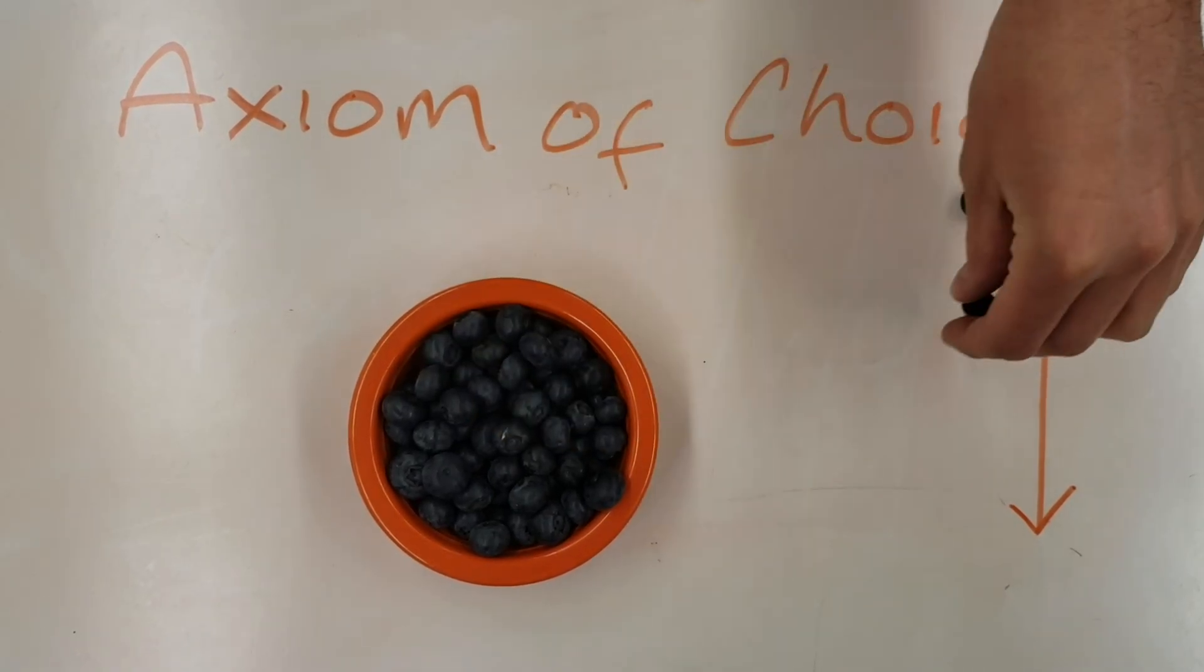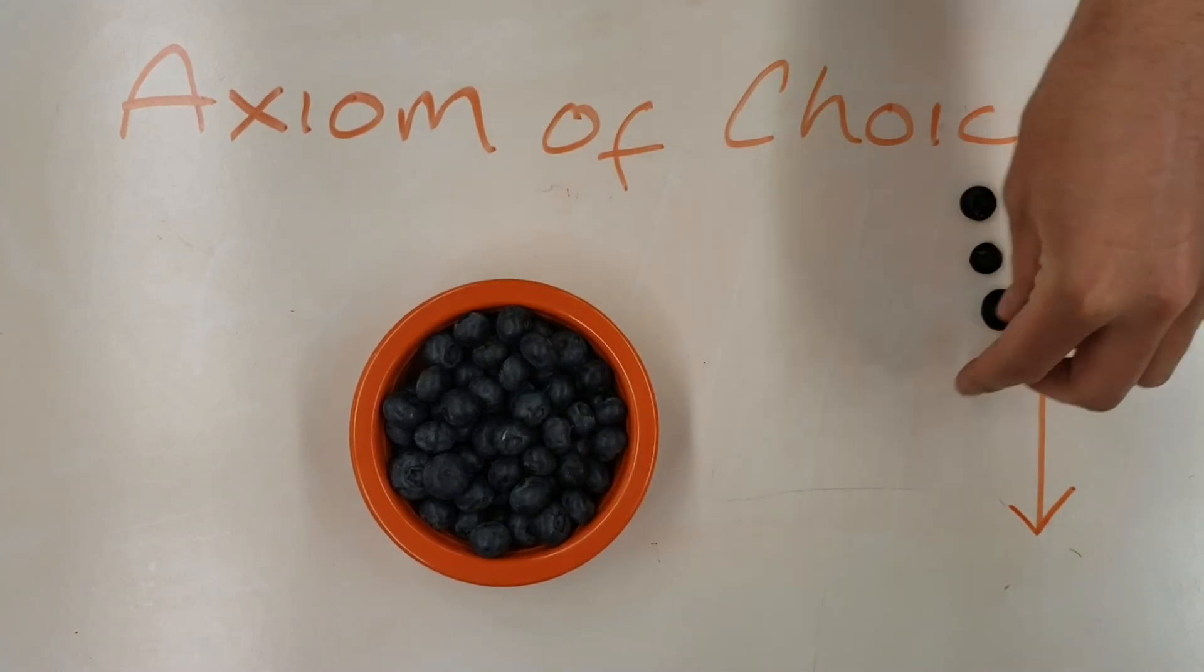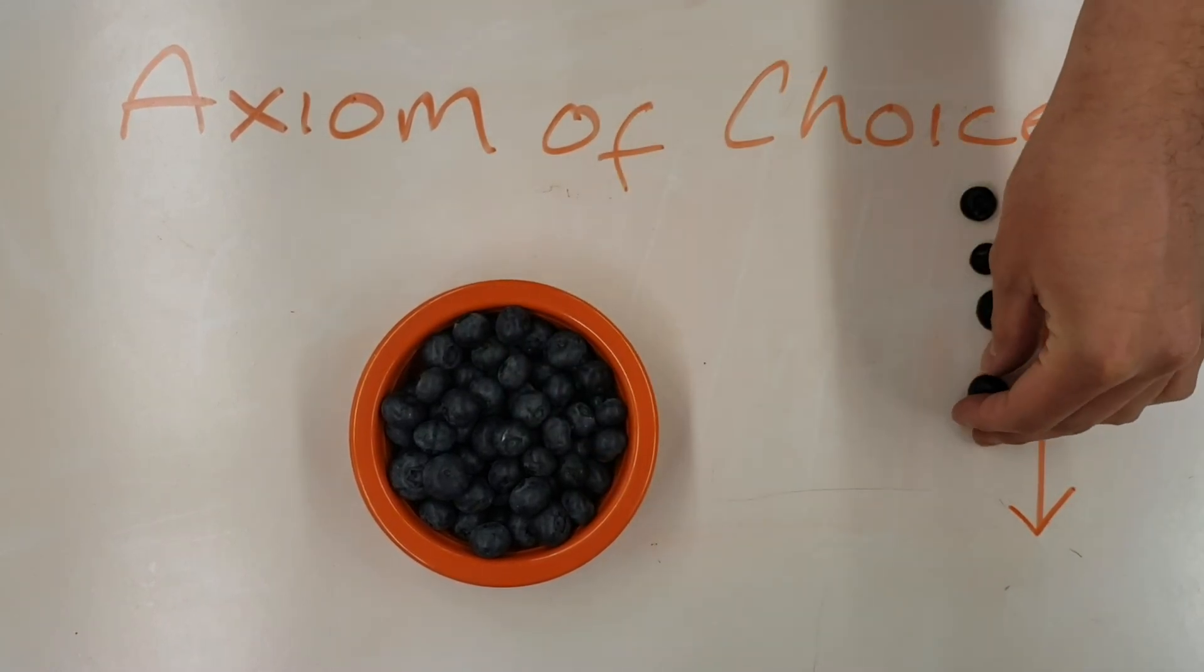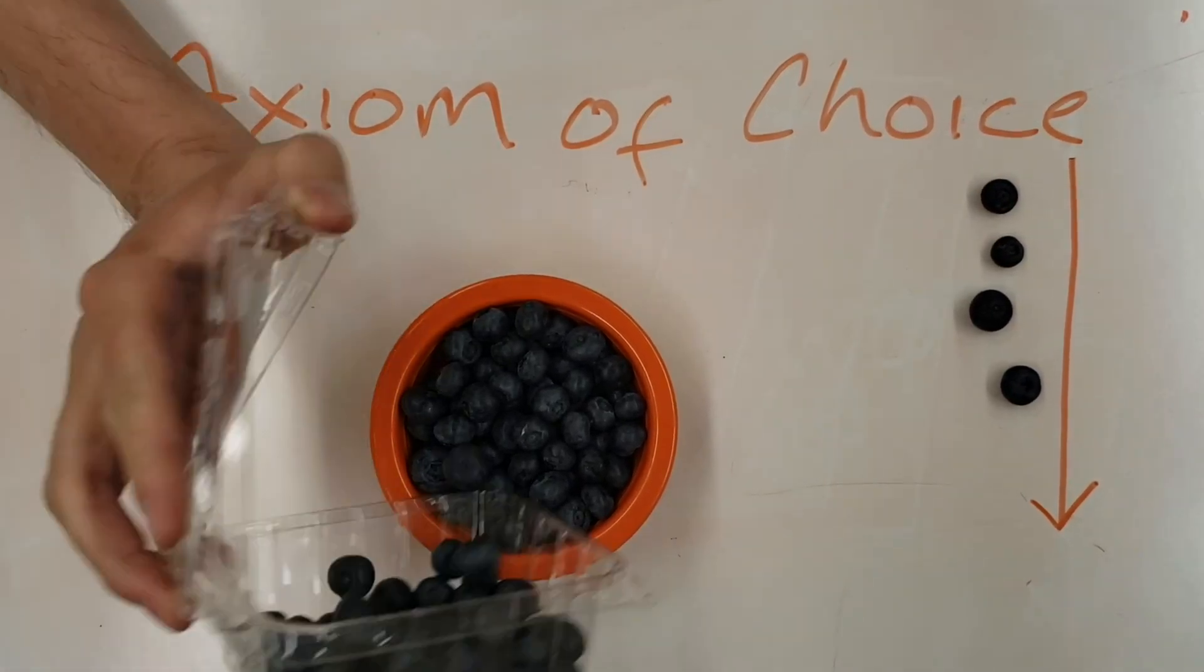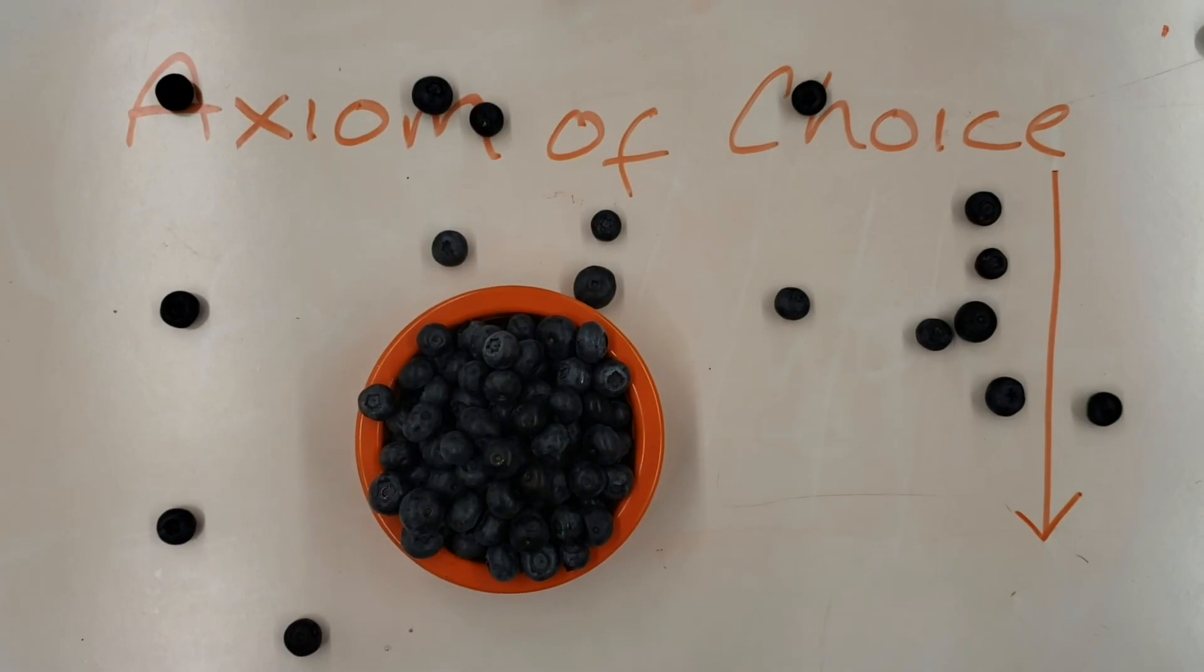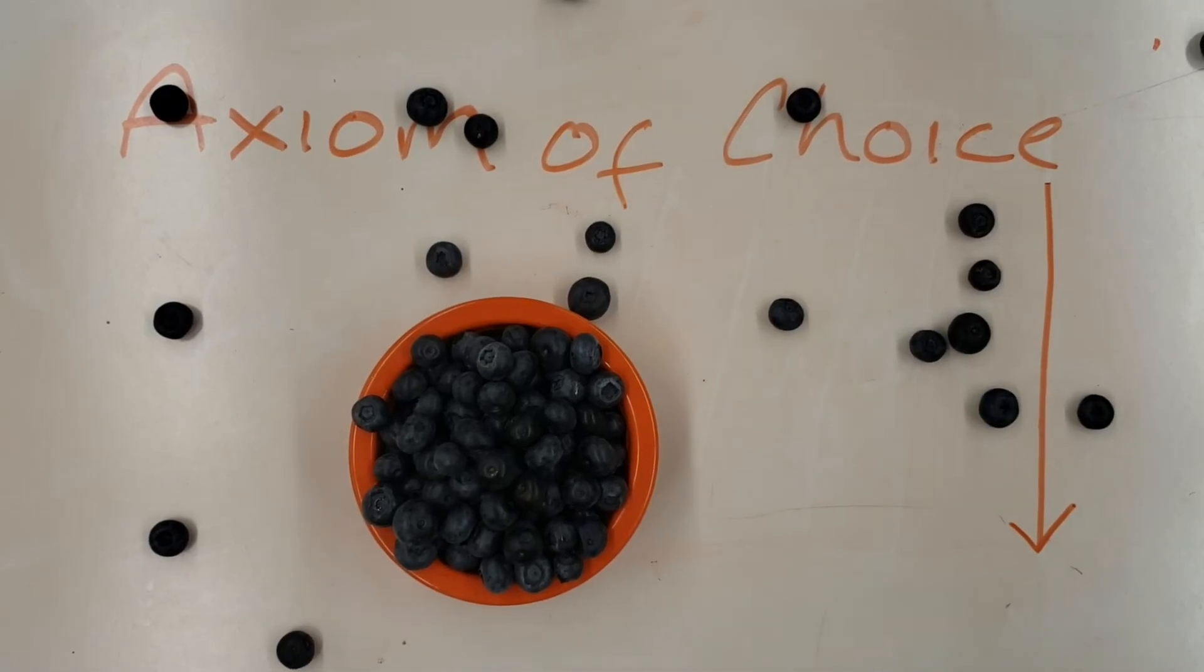Now imagine this is an infinite bucket with a lot more blueberries. Then we can consider every remaining amount of blueberries when we take one out to be an entirely new set.